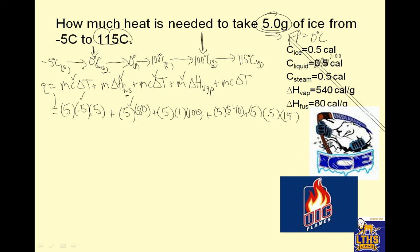So if I were to do this math, I'll just break down the steps. 5 times 5 times 0.5 times 5 is 12.5, plus 5 times 80 is 400, plus 5 times 1 times 100 is 500, plus 5 times 540 is 2700, plus 5 times 0.5 times 15 is 37.5. And I'll add all that up. But I do want to point out, notice most of the heat comes from this step right here, which is this step right here. I talked before about how much, much, much energy it takes to change from liquid to a gas because the difference in bonds are enormous.